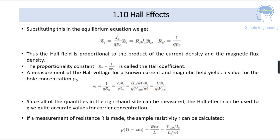Since all of the quantities in the right hand side can be measured the Hall effect can be used to give accurate values for the carrier concentration. So if a measurement of the resistance R is made the sample resistivity we can calculate that is ρ is equal to R·w·t by L. That we can write in terms of Vcd by Ix by L by w·t.